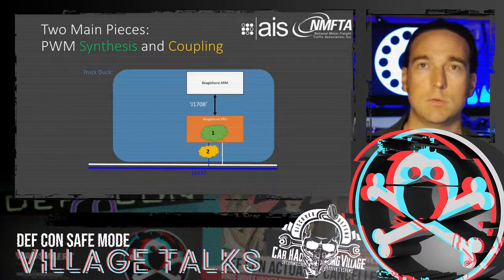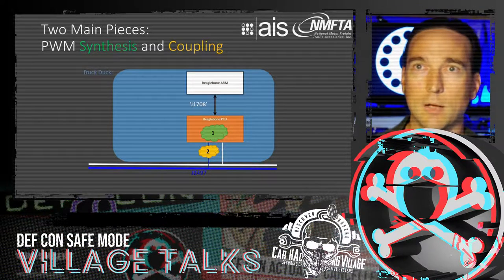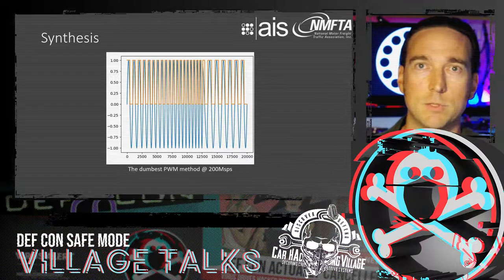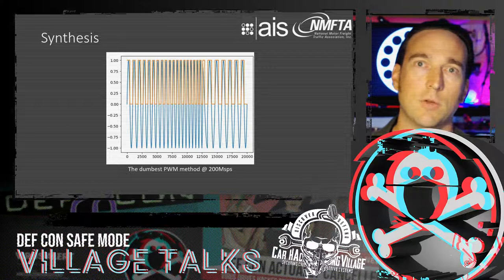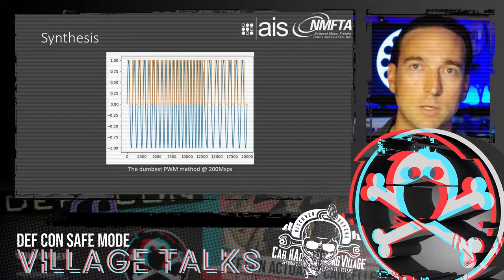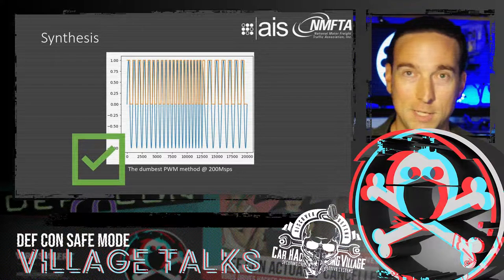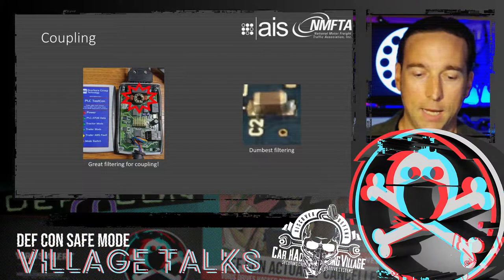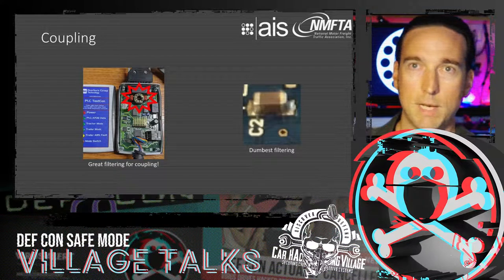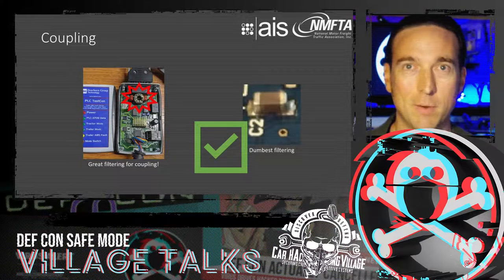Creating PLC signals has two main parts: synthesizing with PWM and coupling onto the PLC network. We tried the simplest PWM first — turn it on when the signal is above zero, off when below zero. The orange waveform is the dumb PWM and the blue is the true chirp, and it actually worked. For coupling, we found a 100 nanofarad capacitor was sufficient — the dumbest filtering and dumbest PWM got us what we needed.